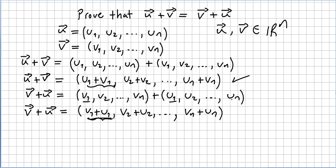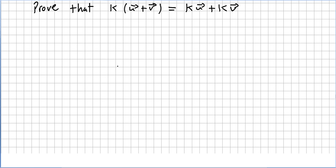So u plus v is equal to v plus u, and that concludes the proof. We are now asked to prove that scalar multiplication distributes over vector addition: k times (u plus v) equals k times u plus k times v.